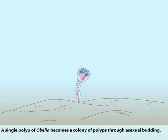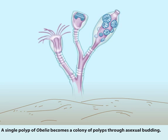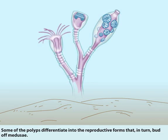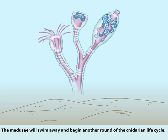A single polyp of Obelia becomes a colony of polyps through asexual budding. Some of the polyps differentiate into the reproductive forms that, in turn, bud off Medusae. The Medusae will swim away and begin another round of the Cnidarian life cycle.